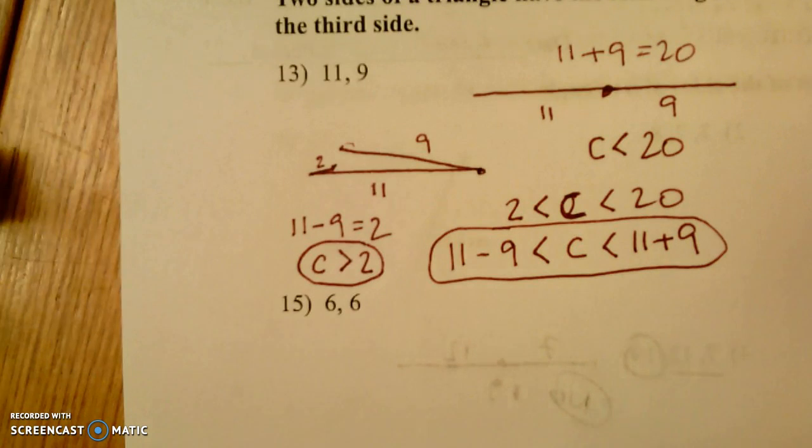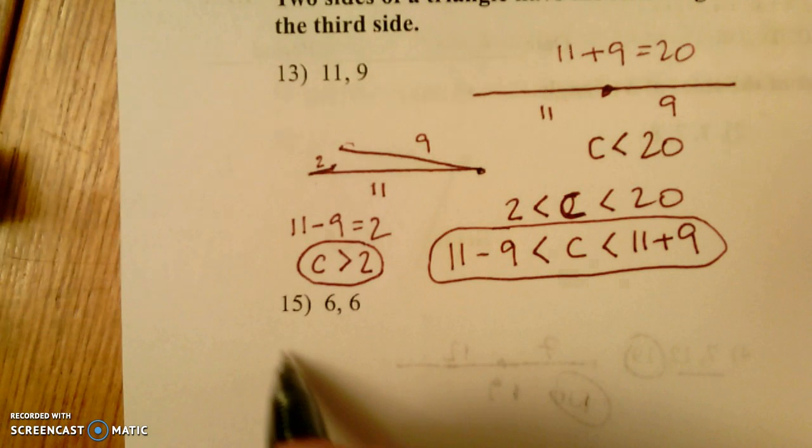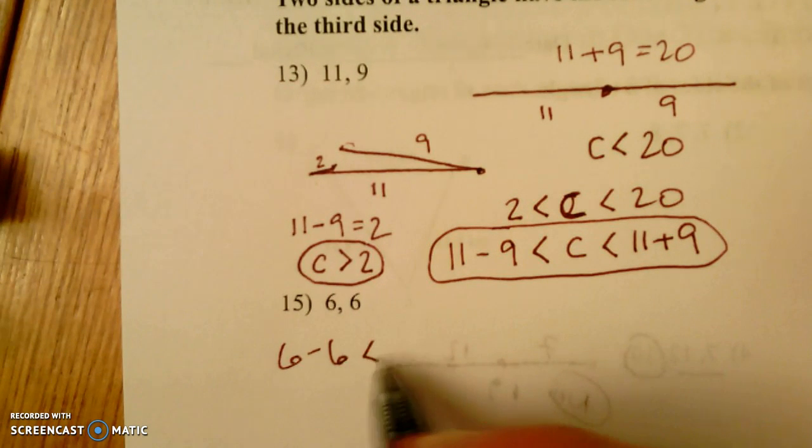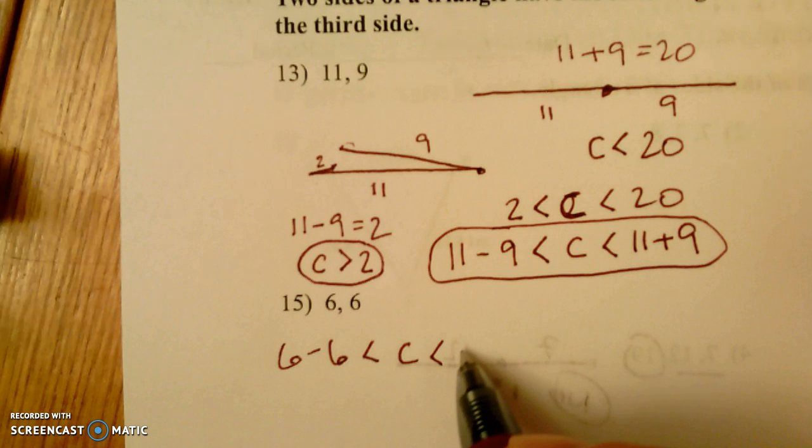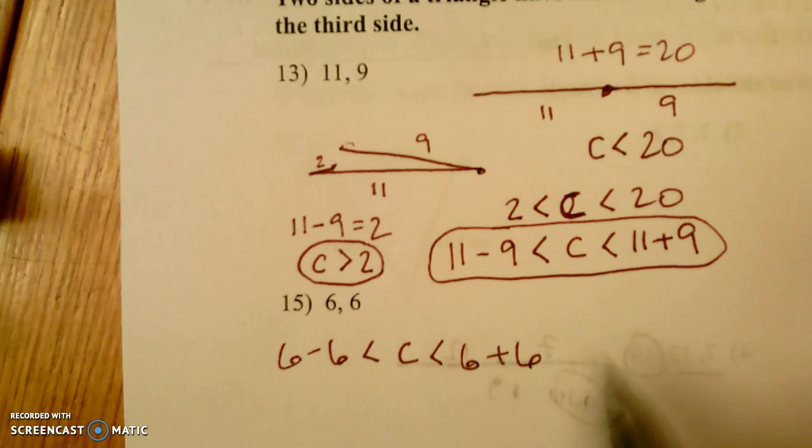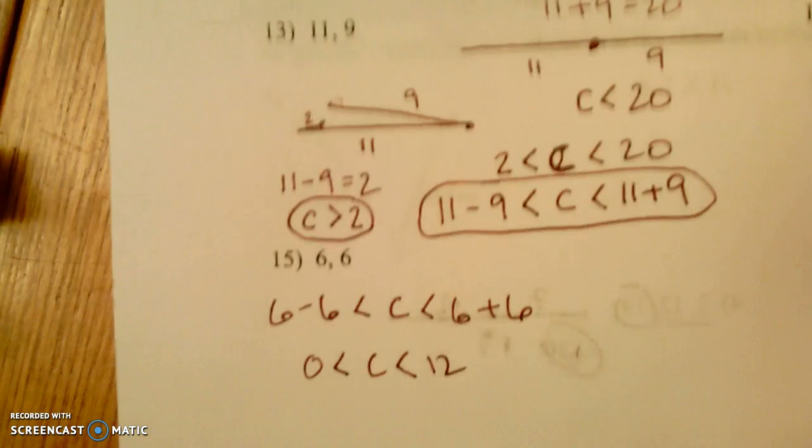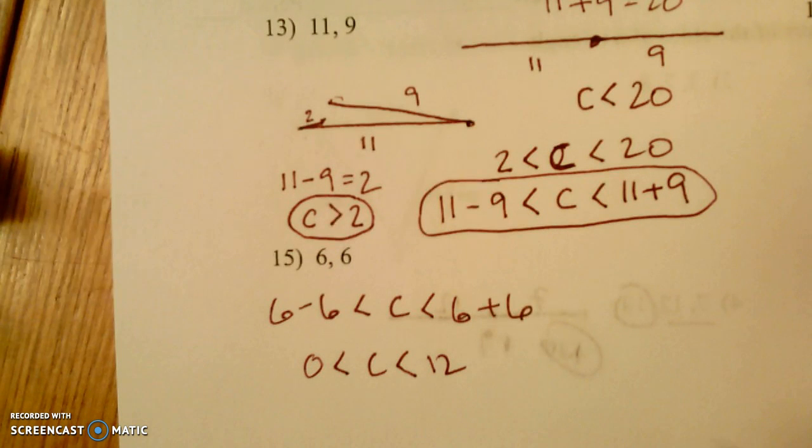Do one more. We have two sixes. Well, six minus six has to be less than c, which is less than six plus six. So you've got zero to 12. So our range for our third side is somewhere between zero and 12.